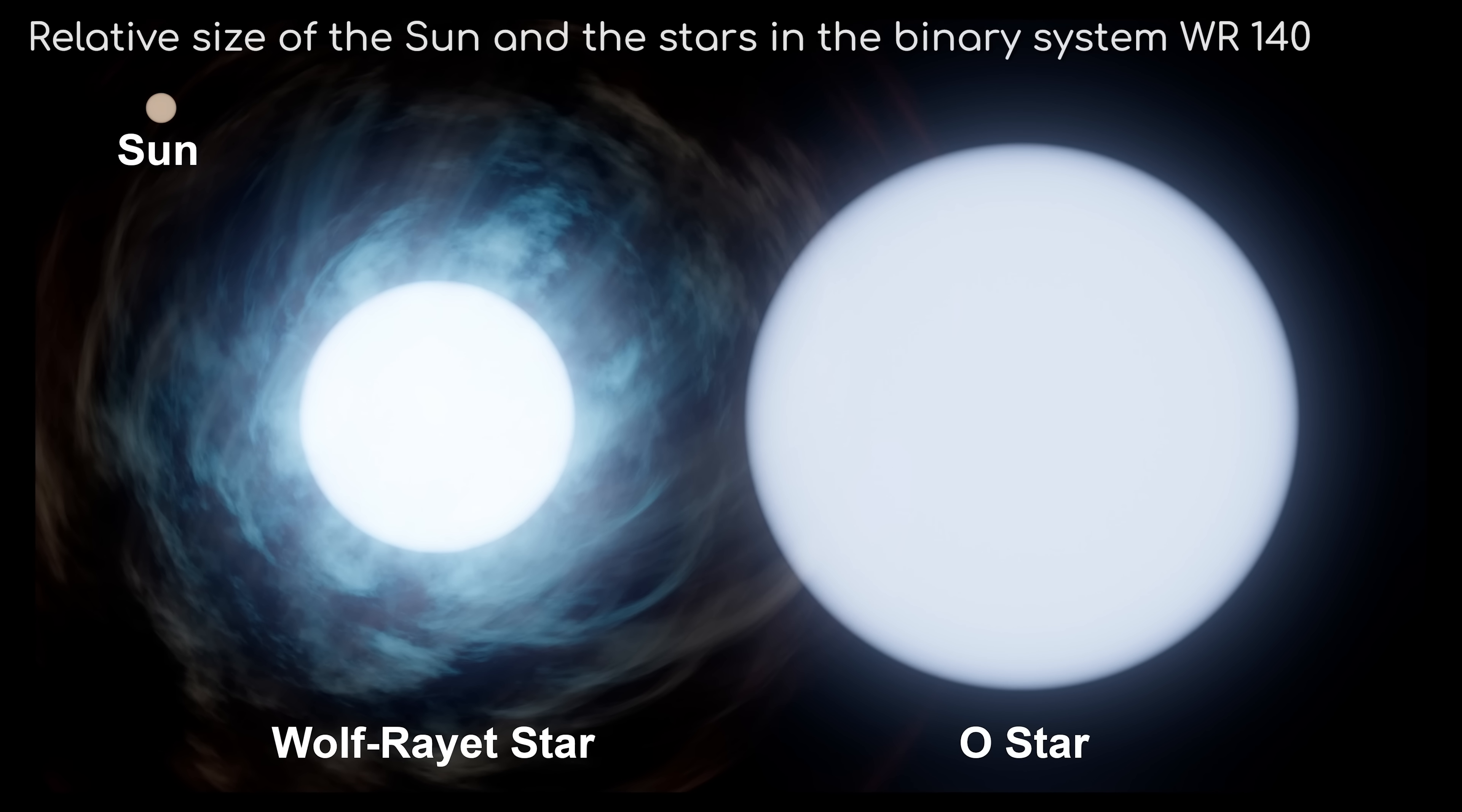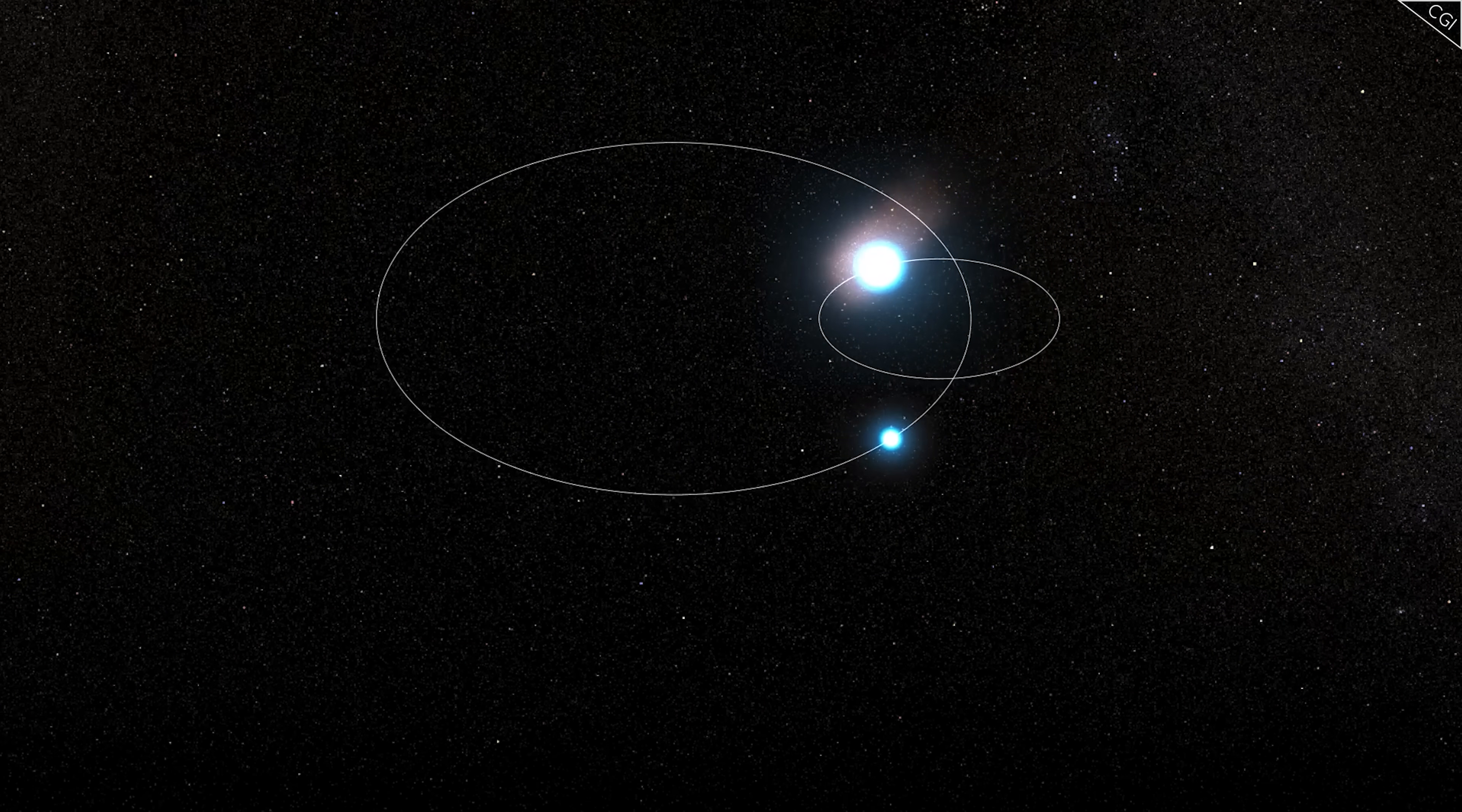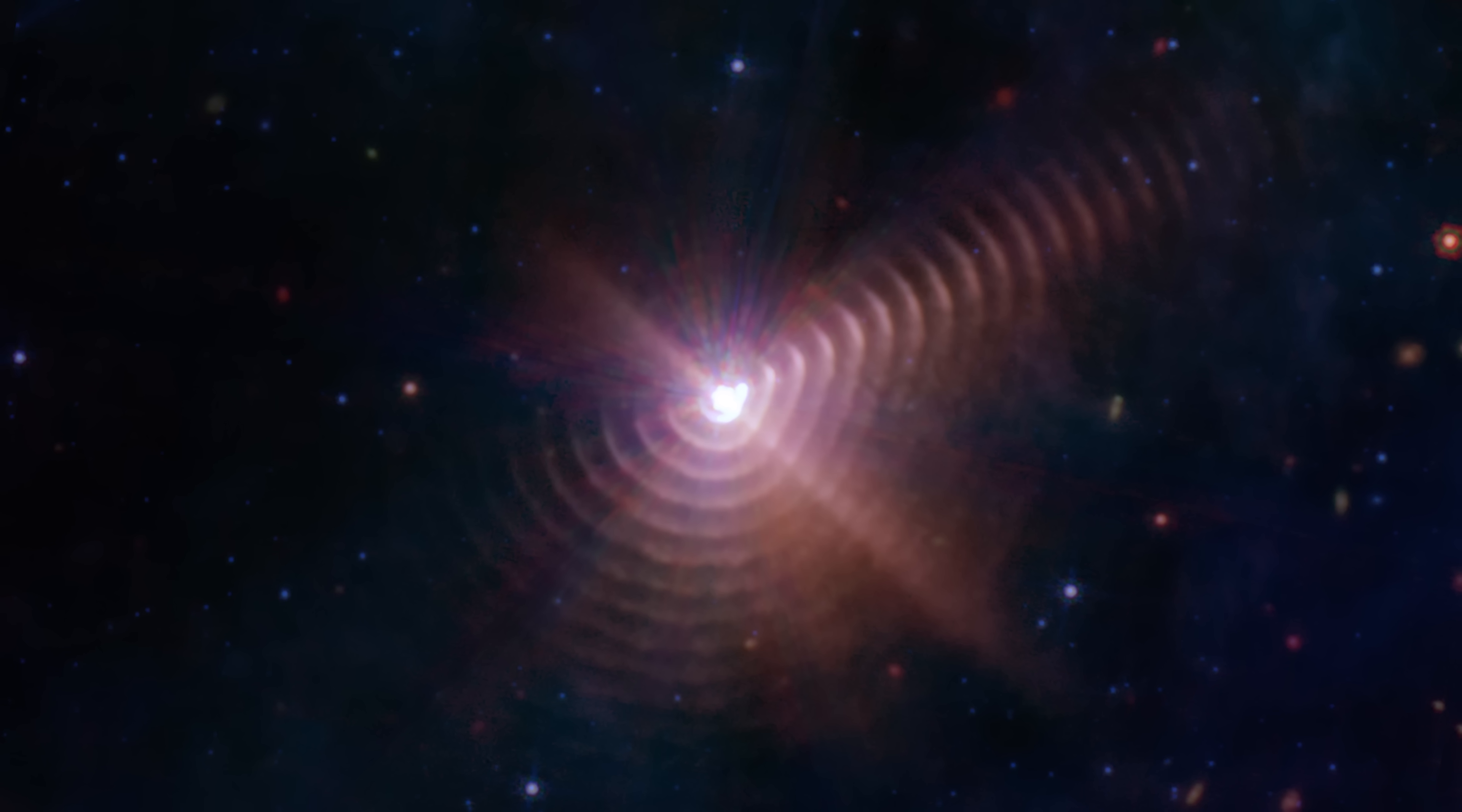At the heart of these rings lies a binary star system. Every 8 years, the two stars at the centre of this system orbit close to each other, and their stellar winds interact in such a way as to blow a fresh ring of dust outward into space. There are at least 17 rings, meaning this process has been ticking along every 8 years for the last 130 years or so. This phenomenon is large. The furthest ring is 70,000 times the distance from the Earth to the Sun. The detail Webb was able to capture is incredible.